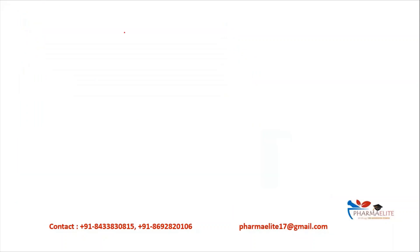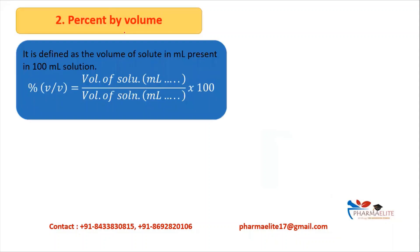The next term is percent by volume. It is defined as volume of solute in ml present in 100 ml of solution. Its formula is: volume of solute (ml) / volume of solution (ml) × 100, where 100 is for percentage. It is also denoted as percent V/V, that is percent volume by volume.